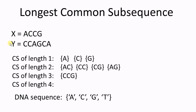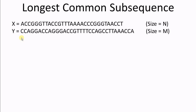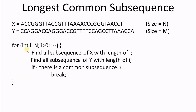But the problem is we have to look at very long sequences of DNA strings. Now we have much longer x and y, and it is no longer possible to manually find the longest common subsequence. We have to write a program and implement some algorithm to find the answer. Let's denote the size of x as n and the size of y as m. Since x is shorter than y, our algorithm is like this: for integer i from n to 1, find all subsequences of x with length i, find all subsequences of y with length i. If there is a common subsequence between x and y, we have found the answer — break.